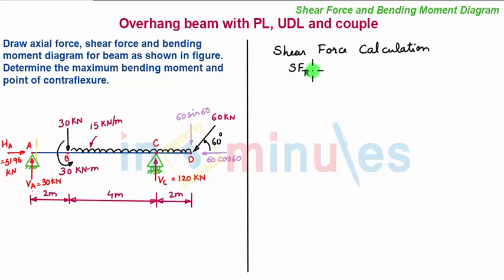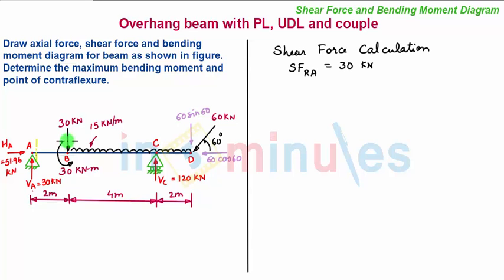Shear force towards the right of A: considering the left-hand side of the section, we determine the value. Moving to the section towards the left of B and very near to it, the shear force towards the left of B — since there is no force acting between these two sections — has the same value of 30 kN.